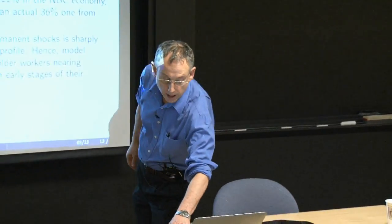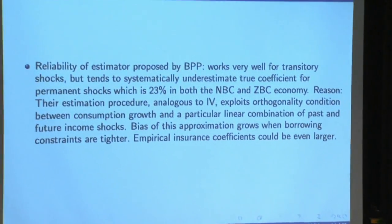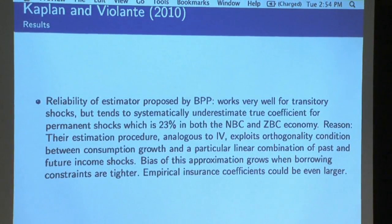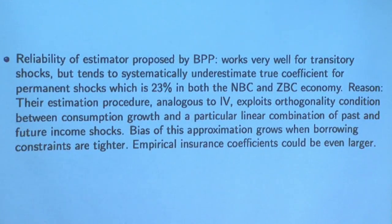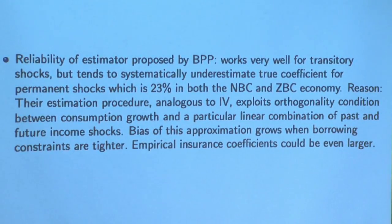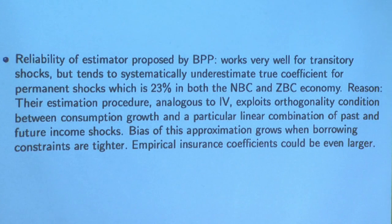If you're skeptical, you've got to be skeptical about BPP because it's supposed to be a fact that they're finding. When they simulate and use data from the model, it's fine for the transitory shocks, but it tends to underestimate the true coefficient for the permanent shocks. That actually makes the situation worse, because the BPP measure showing good insurance for permanent shocks is a lower bound estimate of the actual insurance in the data — so there's an even greater divergence.